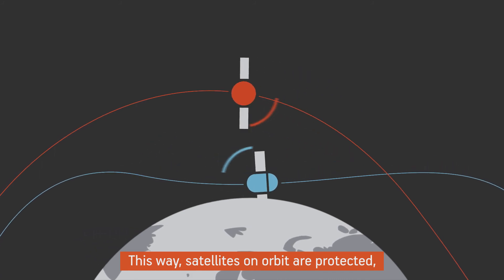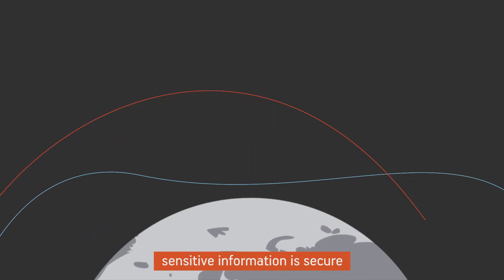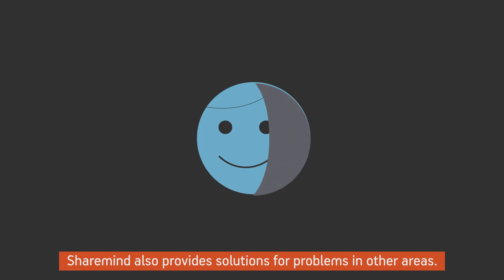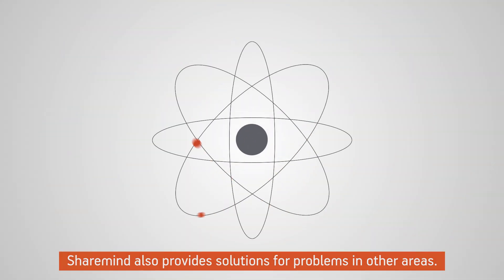This way, satellites in orbit are protected, sensitive information is secure, and the owners of the satellites need not be concerned about their investments. ShareMind also provides solutions for problems in other areas.